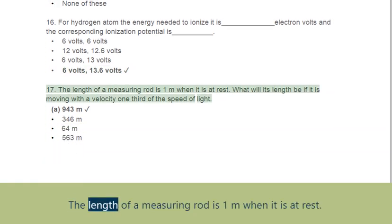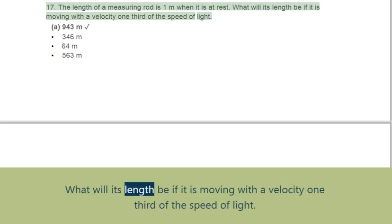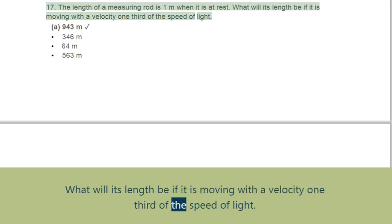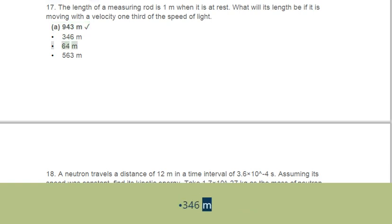Question 17: The length of a measuring rod is 1 meter when at rest. What will its length be if it is moving with a velocity one-third the speed of light? Options: A. 0.943 meters, B. 0.346 meters, C. 0.64 meters, D. 0.563 meters.